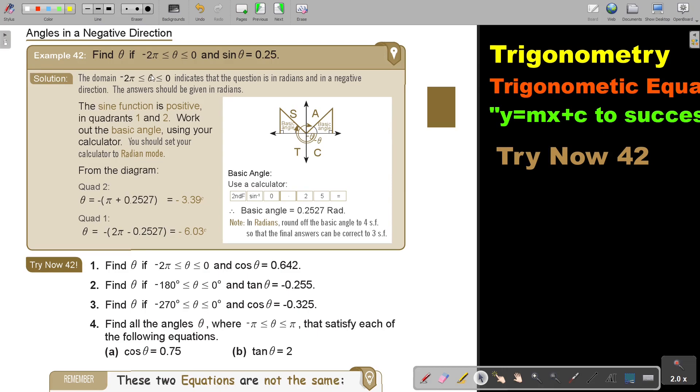The sine function - the CAST diagram works the same. So the sine function is positive in the first and the second quadrant. So work out the basic angle. Using your calculator, you should set your calculator to radian mode already. So then press shift, sin, 0.25 equals. Remember it's in radians. So make it to four significant figures so that your answer can be correct to three significant figures.